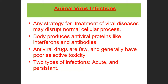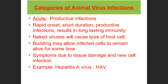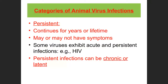The body produces antiviral proteins like interferons and antibodies. Antiviral drugs have generally poor selective toxicity because whatever damages the virus also tends to damage the host, since the virus uses host mechanisms. Viral infections are of two types: acute or persistent. Acute infections have rapid onset, short duration, are productive infections that generate viral particles, and typically result in long-lasting immunity.